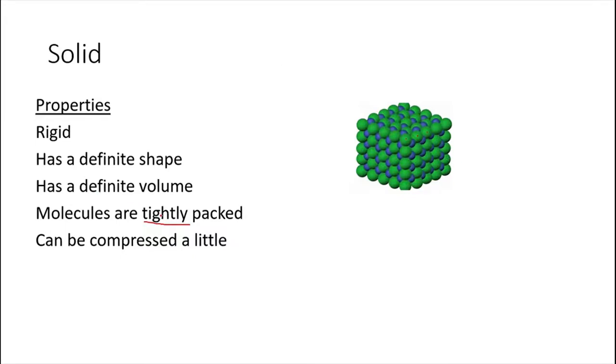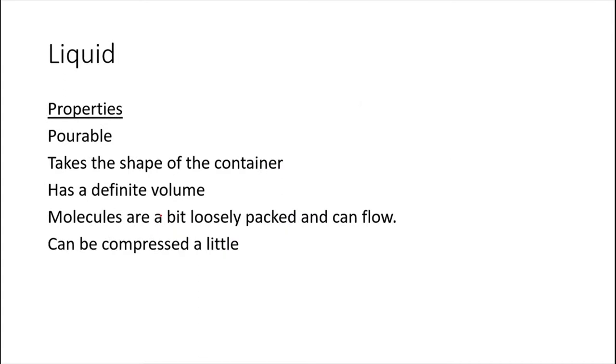Next is liquid. Properties of liquid are: liquid is pourable, so you can pour it from one container to another. It takes the shape of a container. For example, you have water in a bowl and it's a cube-like bowl, so the water is the cube shape. That's why I said it takes the shape of the container.